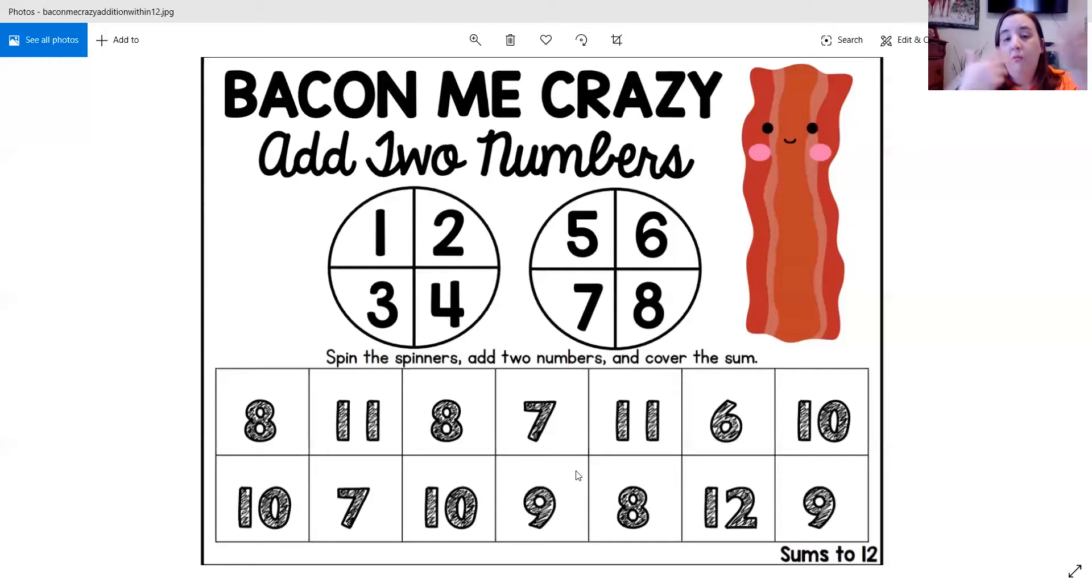If I keep spinning equations that don't give me the answer of 11, like if my sum ended up being 8, well I don't need 8, I already covered it. So I'm going to have to say I lose a turn and it goes to my partner to try.